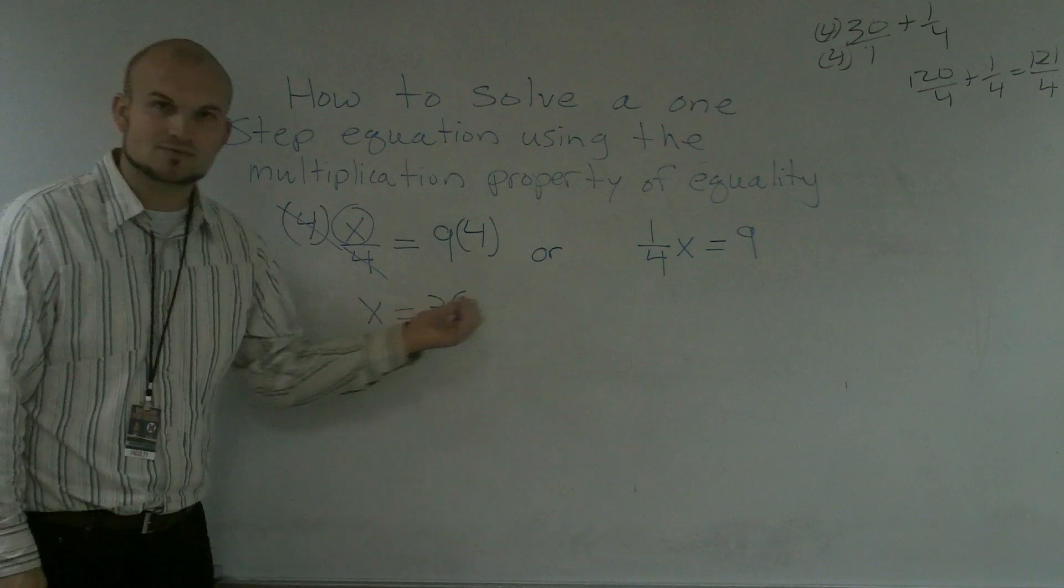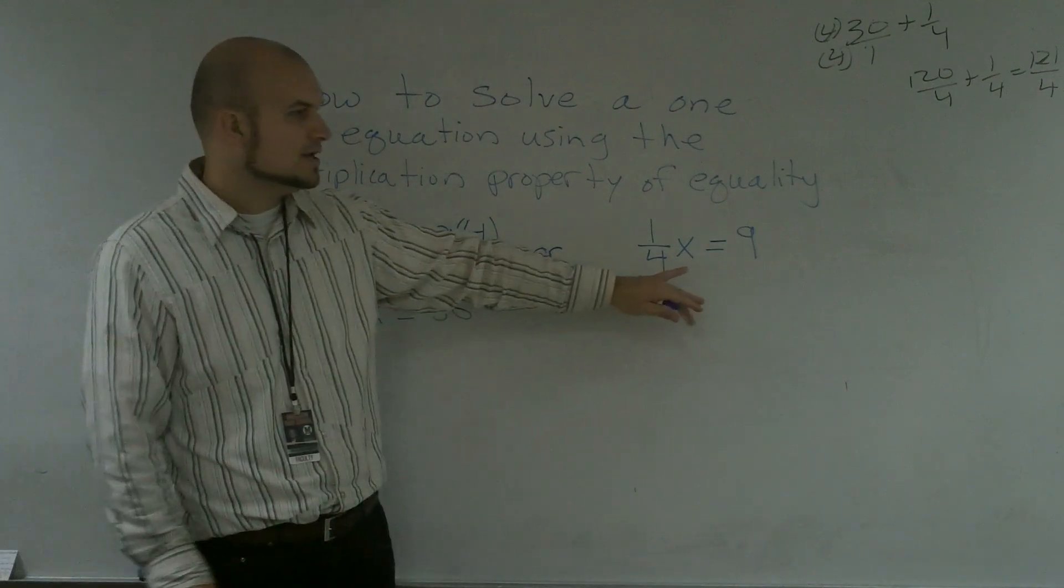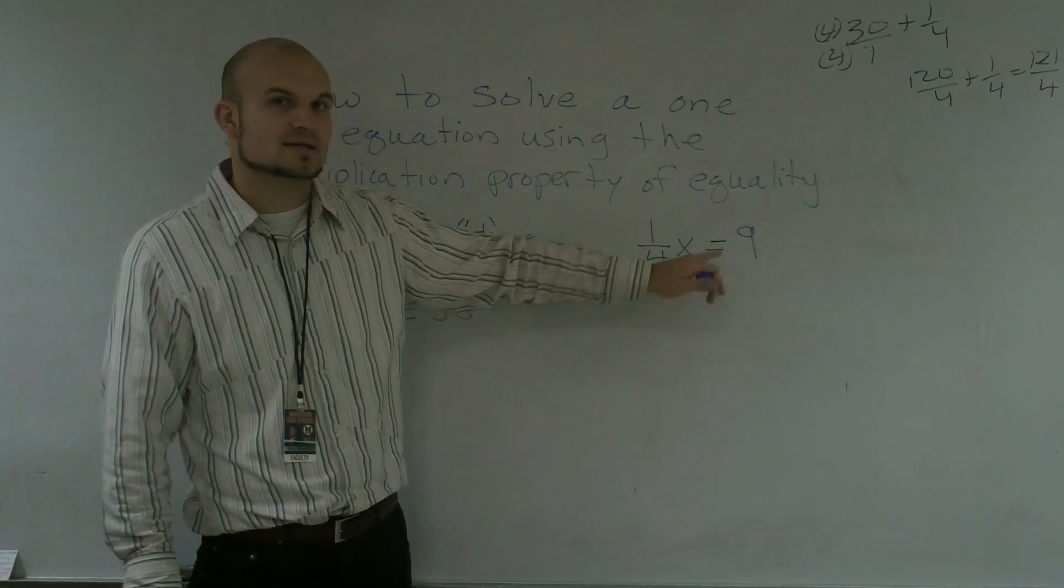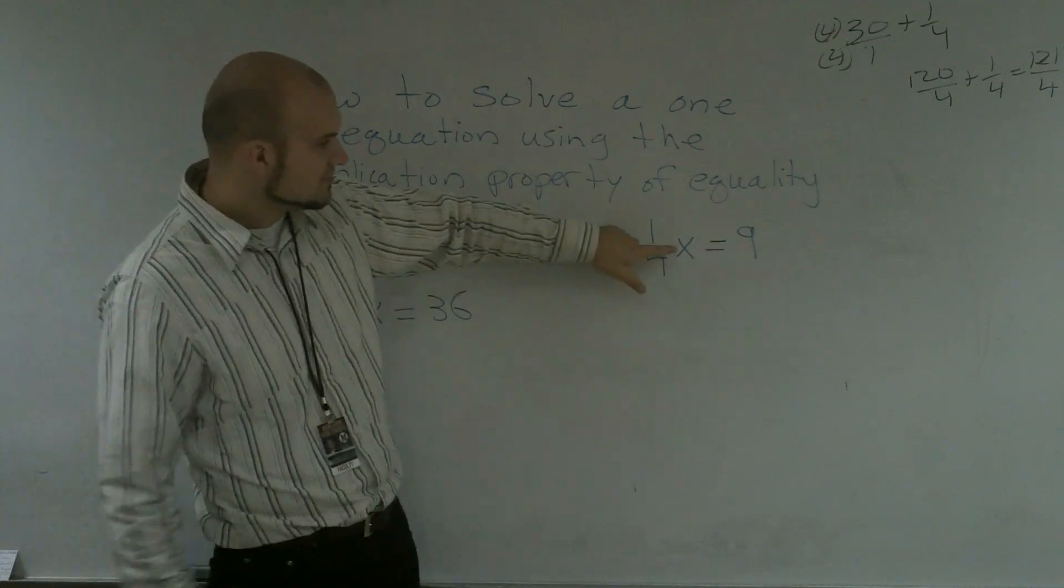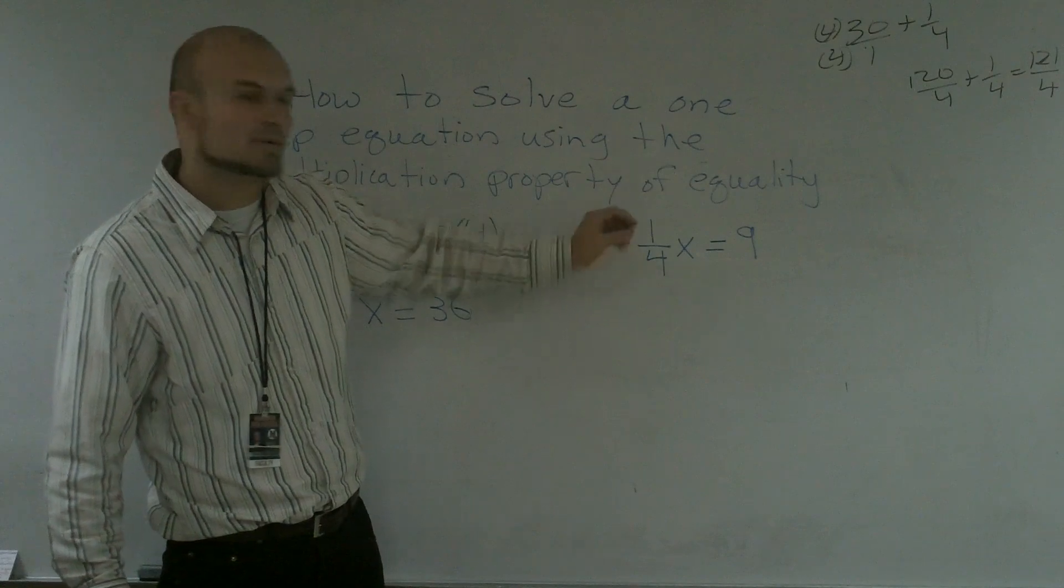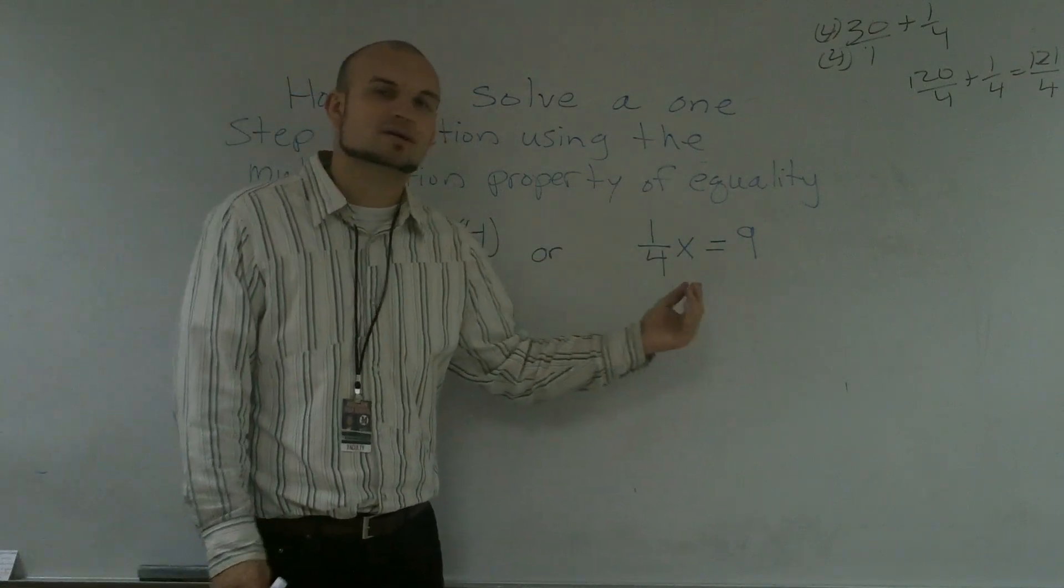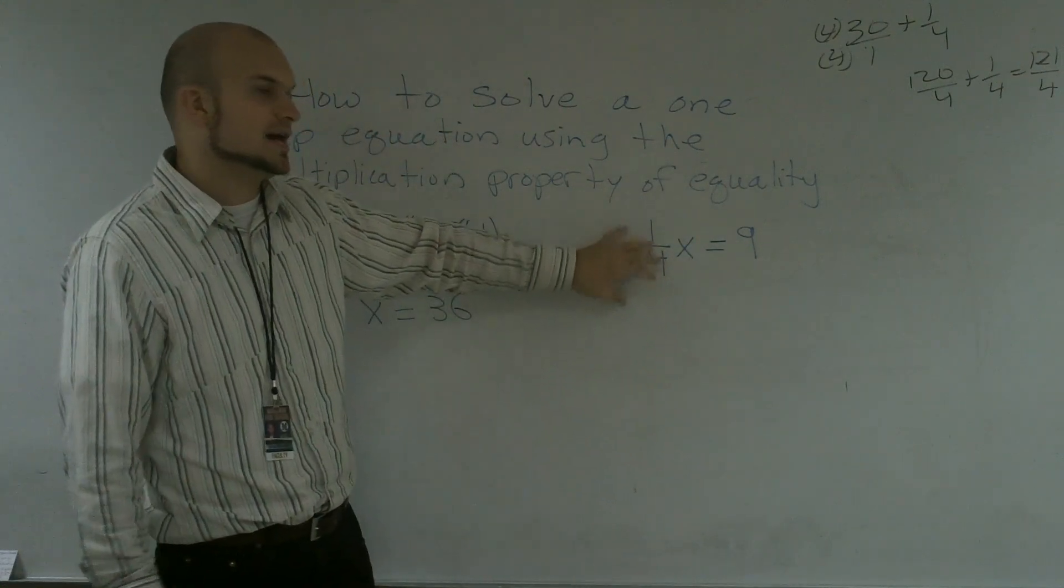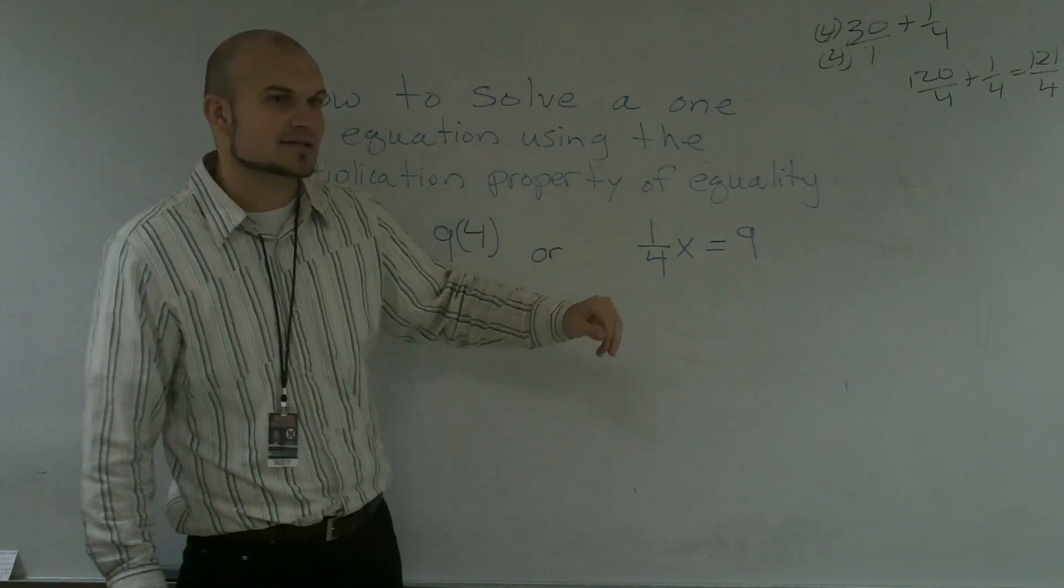Now, an equivalent way to write this equation is also in the form of 1 fourth x equals 9. And what they did is, because x times 1 is x, you could have x over the 4th. What we did was we separated out the fraction. So here, a different way that I would explain this is this is 1 fourth times x.